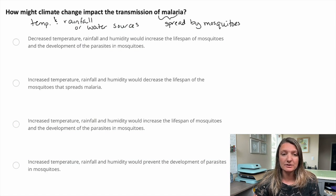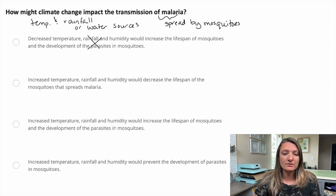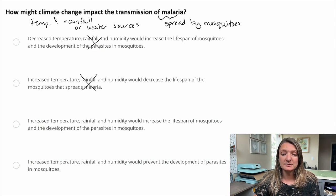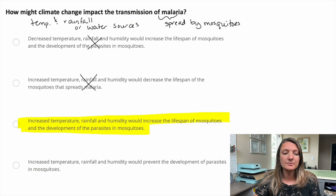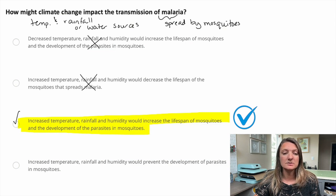Let's read our answers. Decreased temperature, rainfall, and humidity would increase the lifespan of mosquitoes and the development of the parasites — that's not true. Increased temperature and rainfall and humidity would decrease the lifespan of the mosquitoes that spread malaria — as we talked about, that also won't be true. C is going to be our correct answer. Increased temperature, rainfall, and humidity would prevent the development of parasites in mosquitoes — we don't see that, so D is also incorrect. We are left with our answer, C.